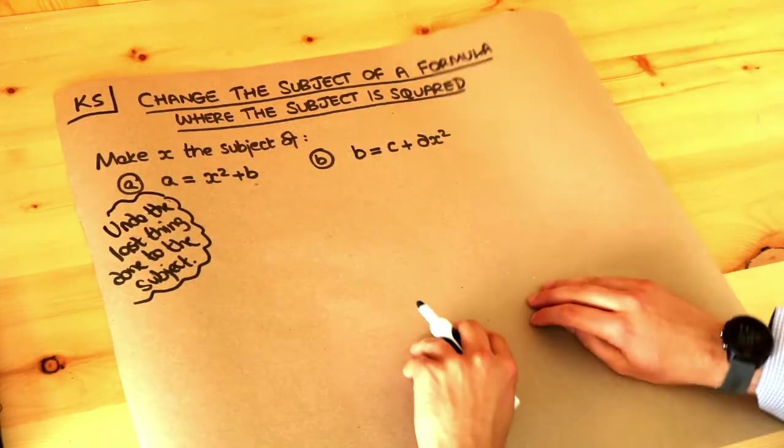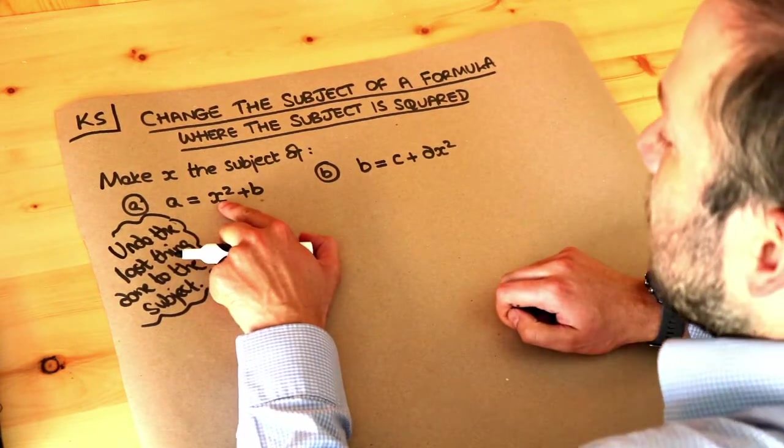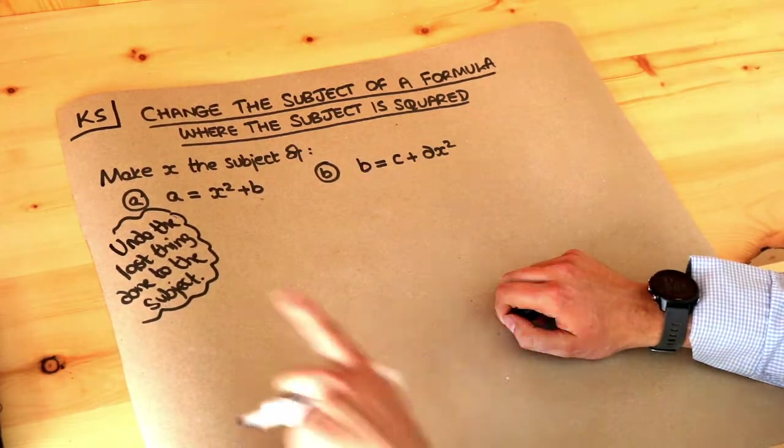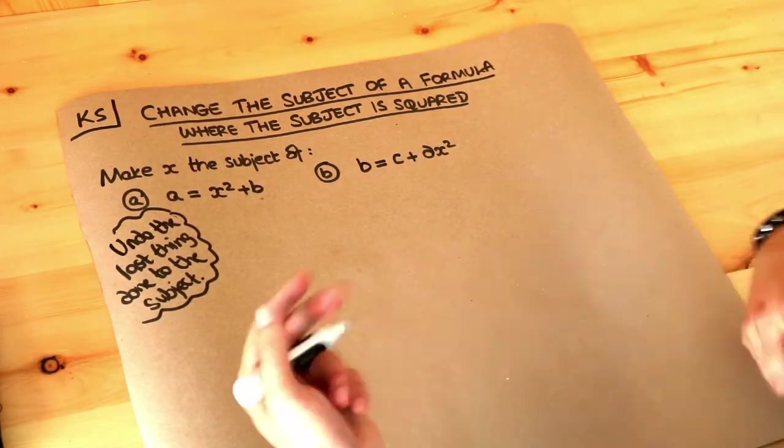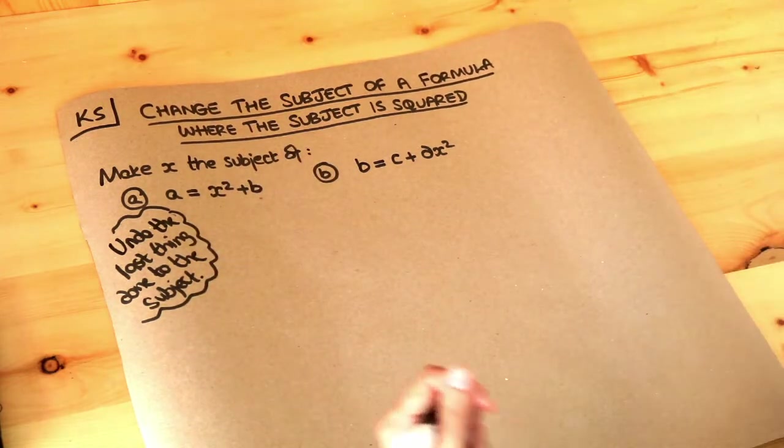I'll explain what that means. If we think about the story of what's happened to this x, the x is being squared and then we're adding b. What was the last thing we did? Well, the last thing we did was add the b.